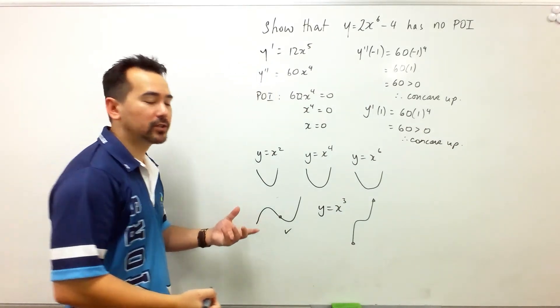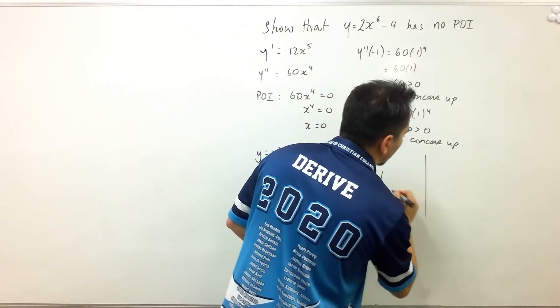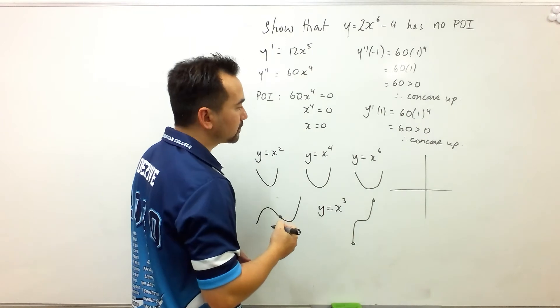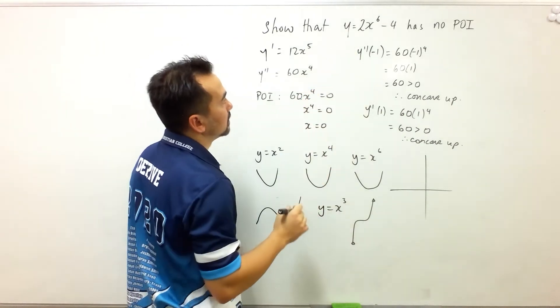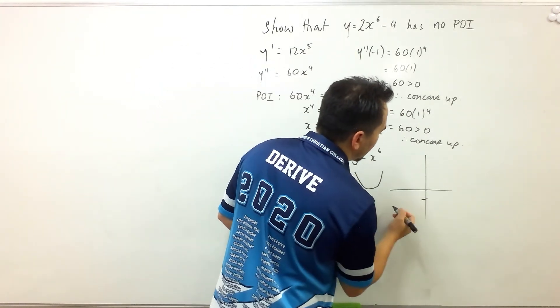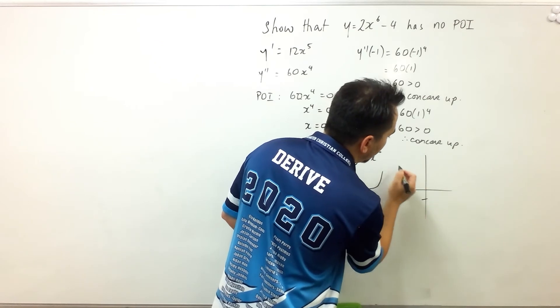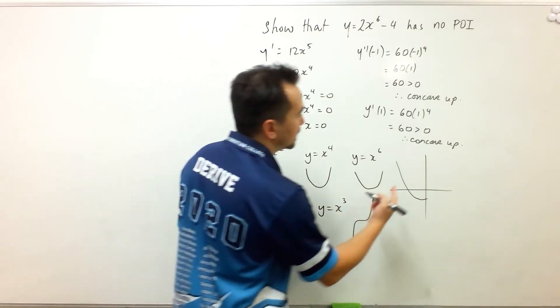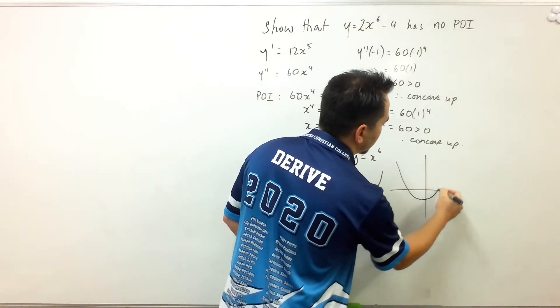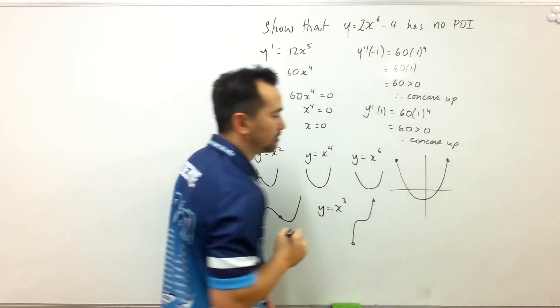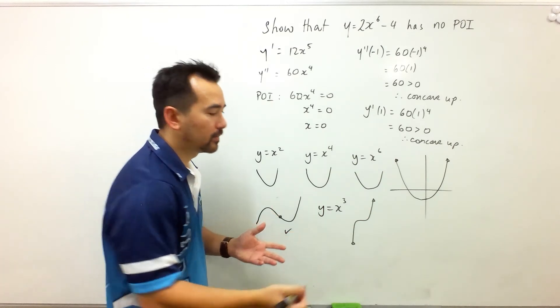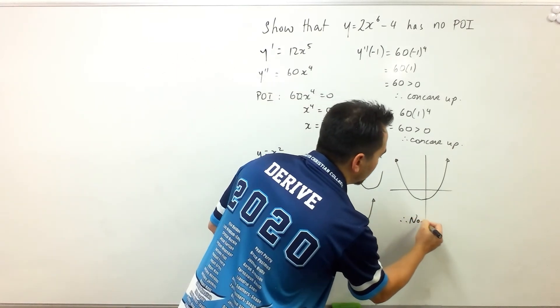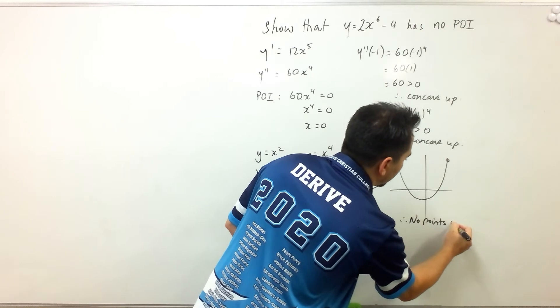So basically, we have shown algebraically that we have a scenario where 2x to the power 6 take away 4 is concave up to the left of 0, and then it's concave up to the right of 0. And we can conclude, therefore, no points of inflection.